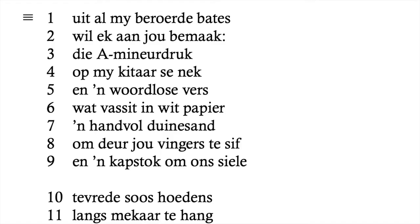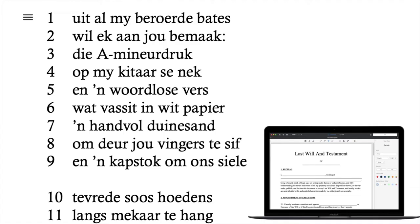Reading the poem: 'Uit al my beroerde bate wil ek aan jou bemaak: die A-mineur druk op my kitaarsnek, en 'n woordlose vers wat vasit in wit papier, 'n handvol dynesand om deur jou vingers te sif, en 'n kapstok om ons siele tevrede soos hoede langs mekaar te hang.' There isn't too much alliteration or assonance in this poem. It's basically about a relationship that ended.